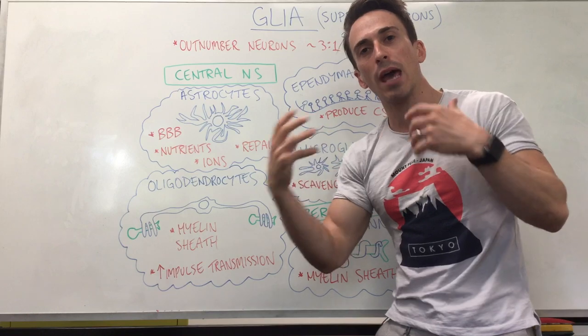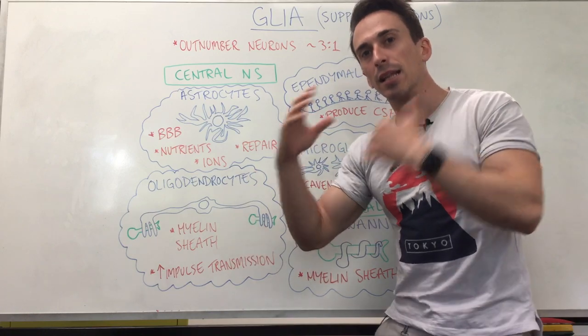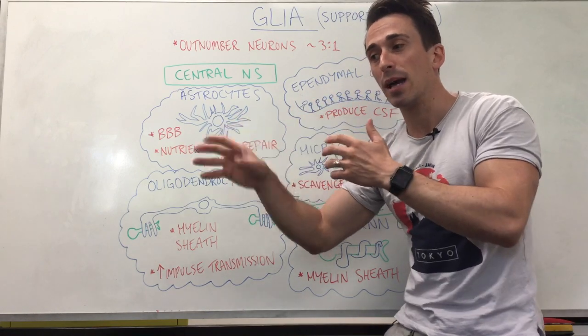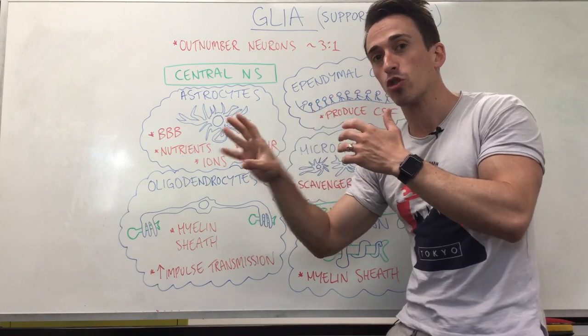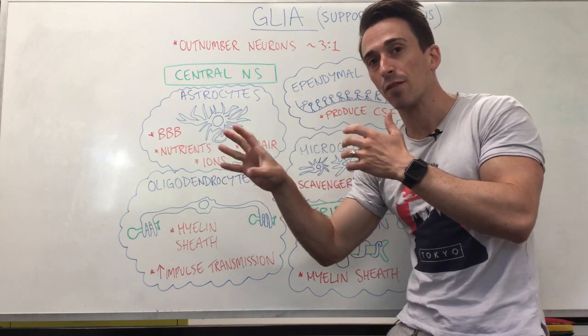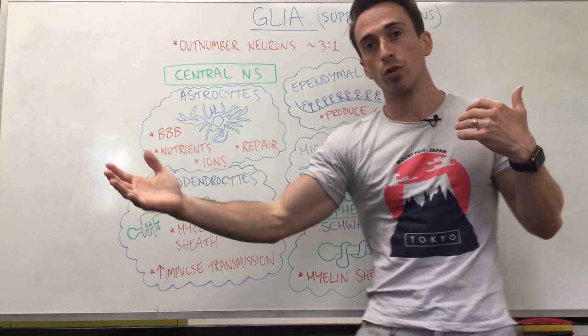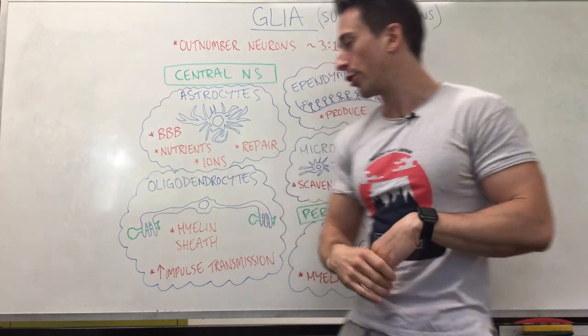When somebody has multiple sclerosis, this is a degeneration of the myelin sheaths of the oligodendrocytes. That means people with MS have electrical signals that can dissipate — they're not very strong, they don't get sent very well, and therefore multiple downstream effects can occur.